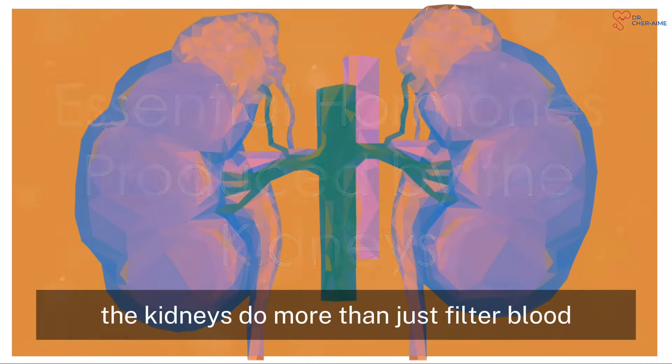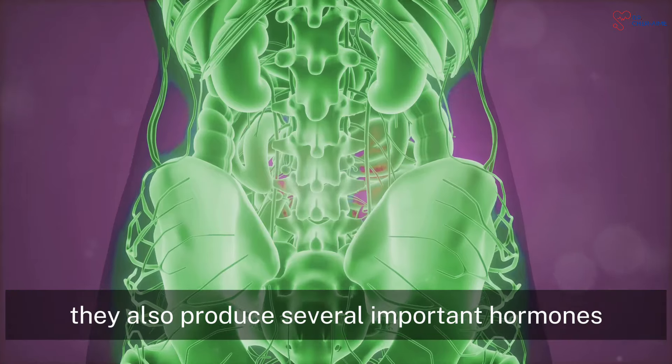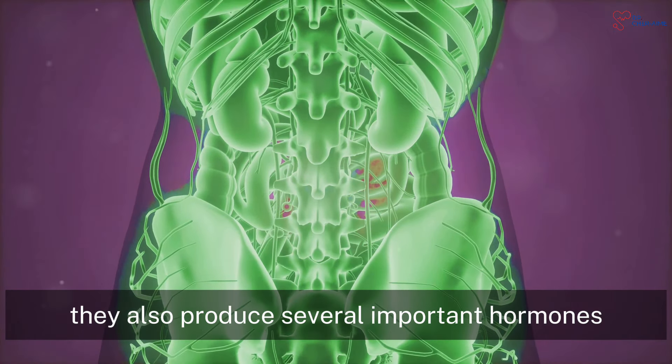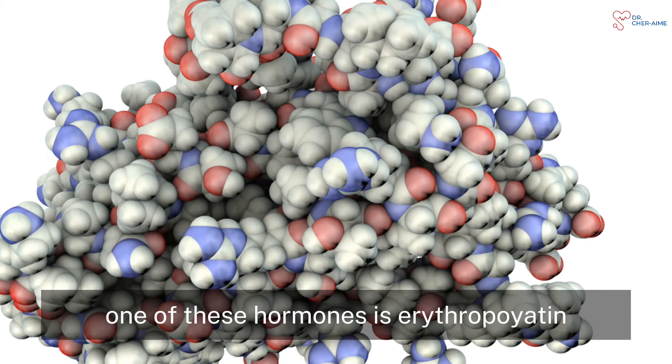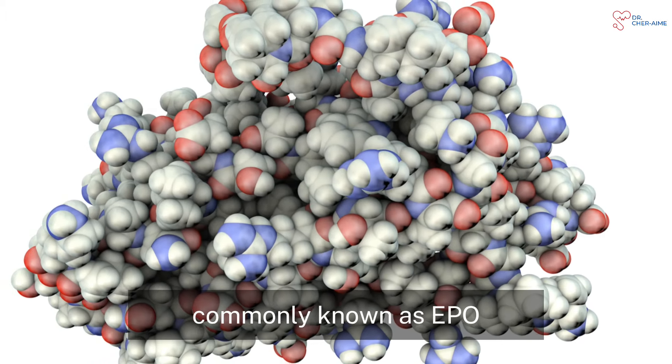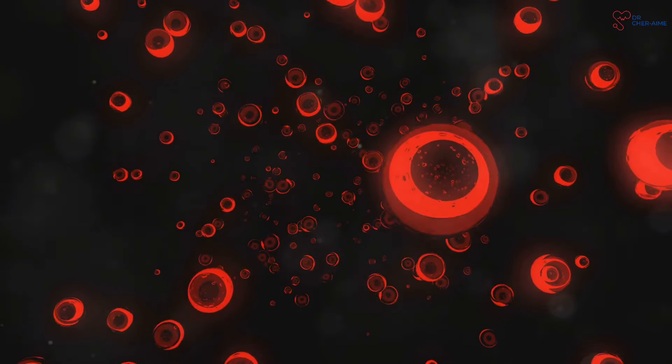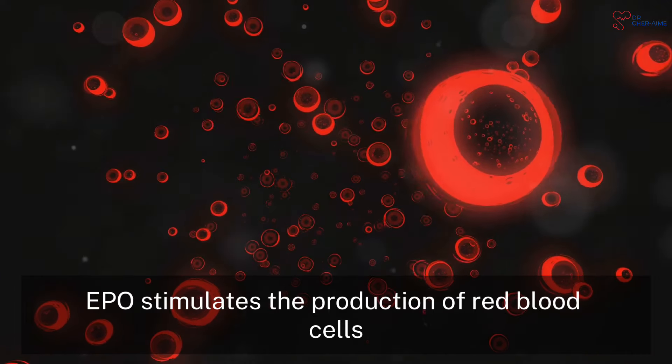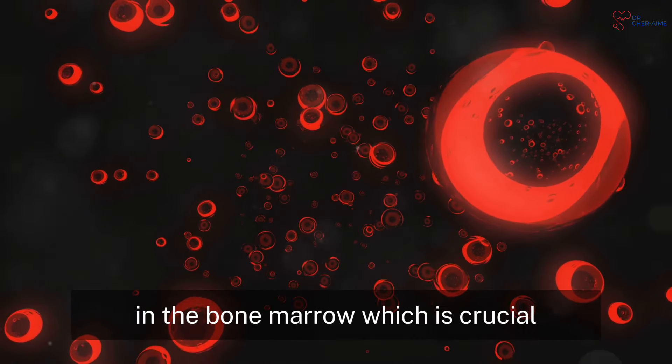The kidneys do more than just filter blood. They also produce several important hormones. One of these hormones is erythropoietin, commonly known as EPO. EPO stimulates the production of red blood cells in the bone marrow, which is crucial for carrying oxygen throughout the body.